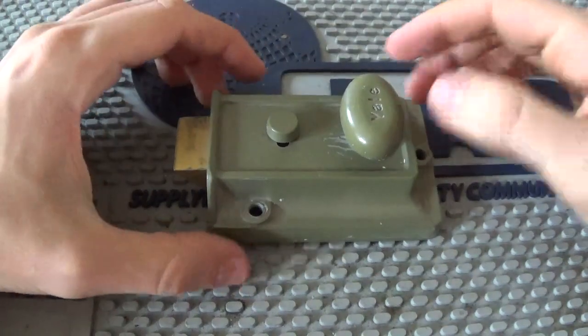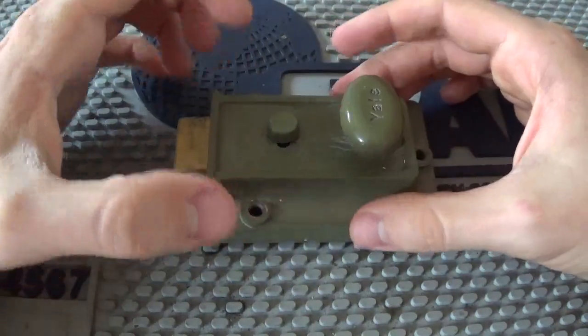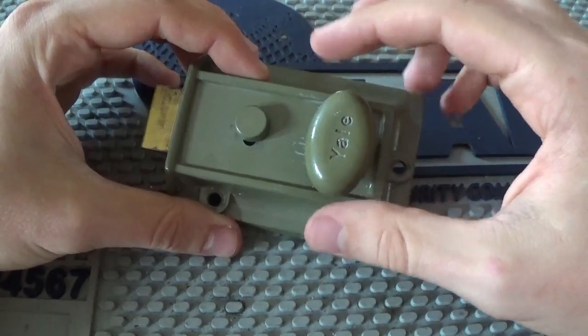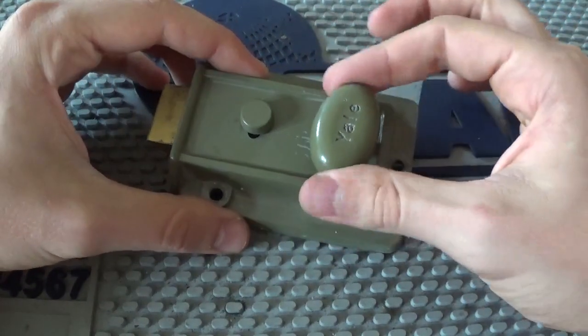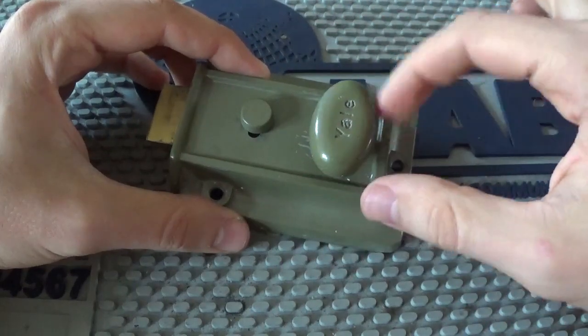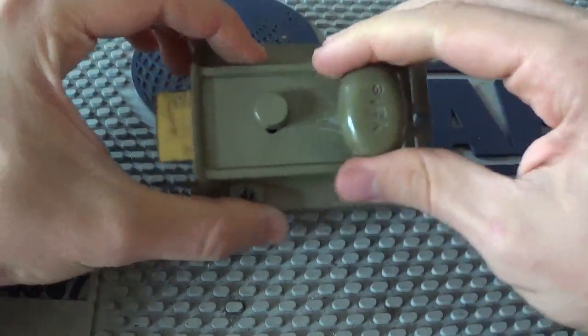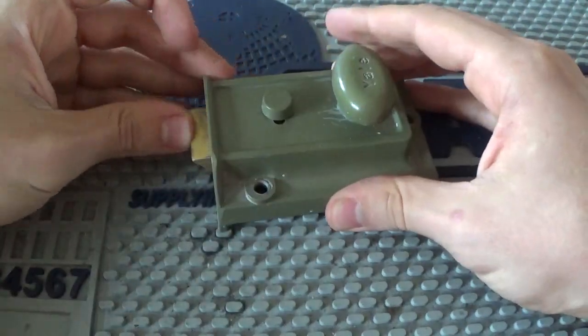So in this video I just want to talk about the night latch. This is your typical standard Yale night latch with the oval sort of thumb turn there. You turn it either way and it operates the spring-loaded bolt there.